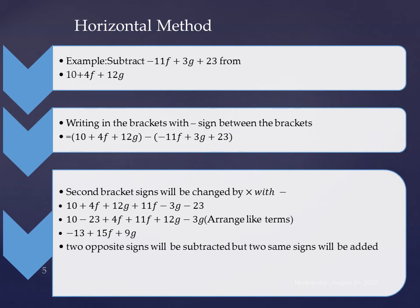Now we are arranging the like terms because of the algebraic rule. 10 minus 23 plus 4f plus 11f plus 12g minus 3g. In the first two terms, 10 is plus and 23 is minus. Plus, minus, minus. So we are subtracting. It become minus 13.